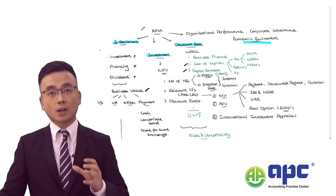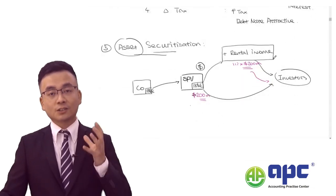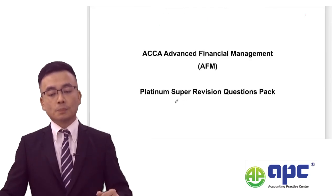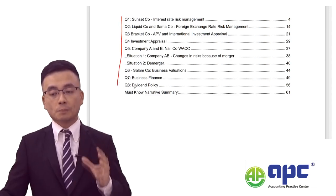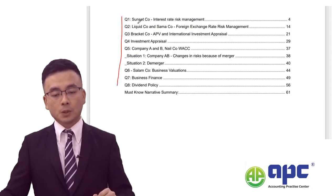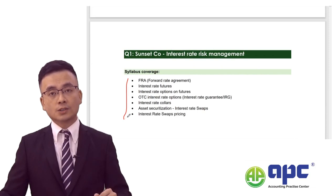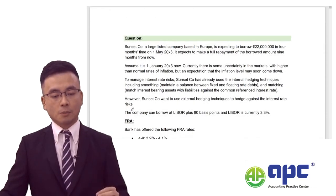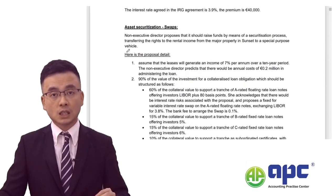After that, in my quick revision course, I will firstly summarise all the topics using my handout. This ensures you fully understand the concepts before you dip into my platinum super revision question pack. I've created eight fundamental questions covering all the areas you need to know. For example, in my interest rate risk management question — a single question — I've set all the required areas from the AFM syllabus, covering futures, options, swaps, and even asset securitisation.